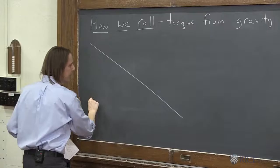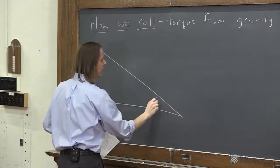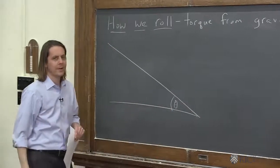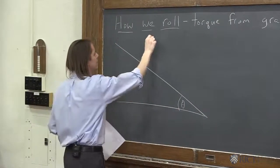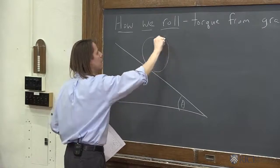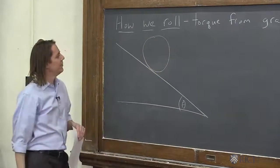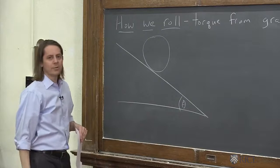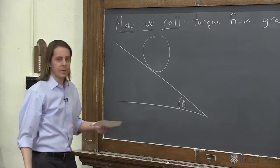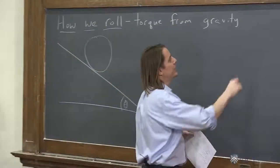So there is the ramp at some angle theta, and here is the cross-section of the cylinder. Now we want to describe how fast it goes down the ramp. Well, we go straight to Newton's second law for rotations.